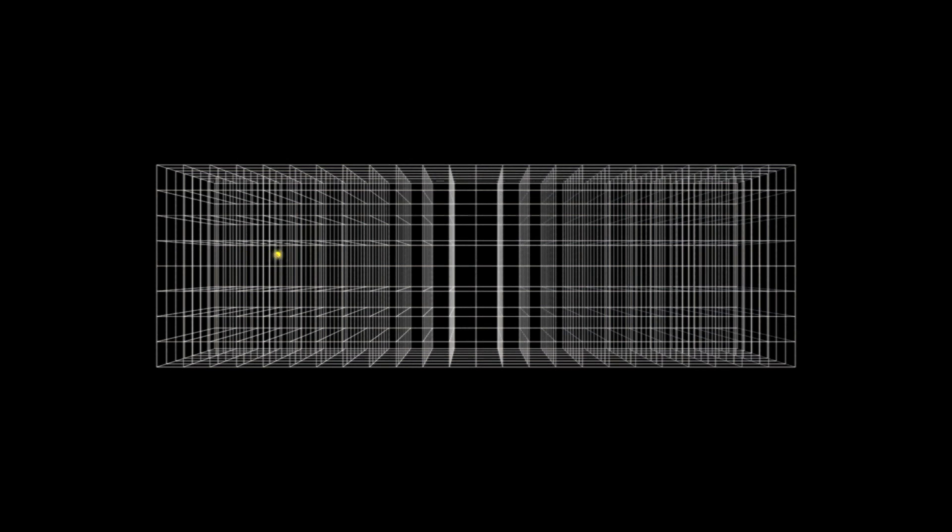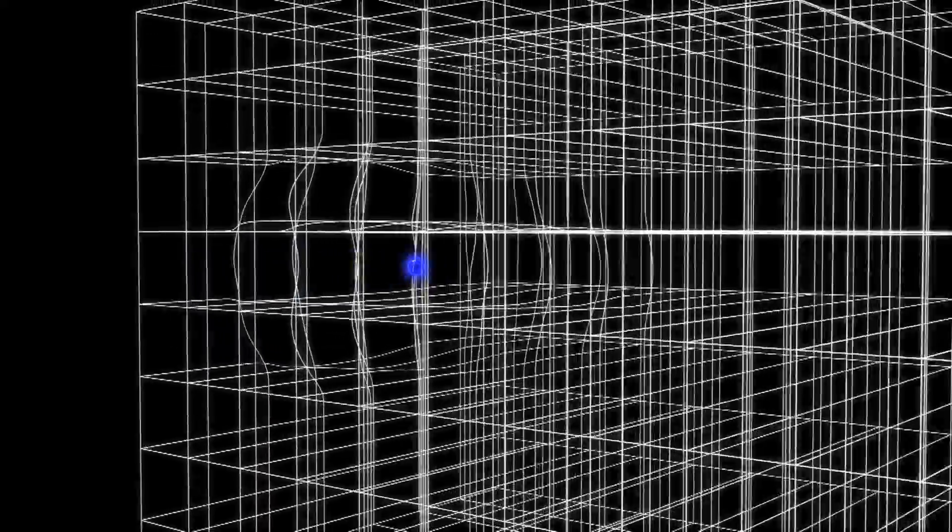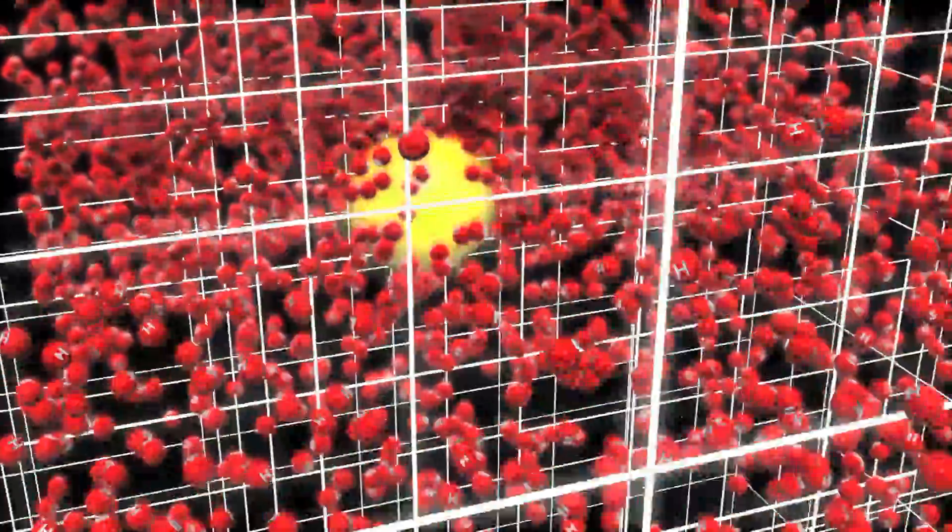An electron, which has virtually no mass, passes through the Higgs field virtually unimpeded. On the other hand, a top quark, which has a relatively heavy mass, lumbers through the Higgs field.